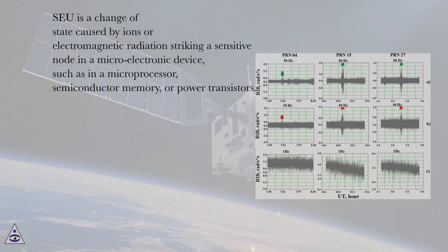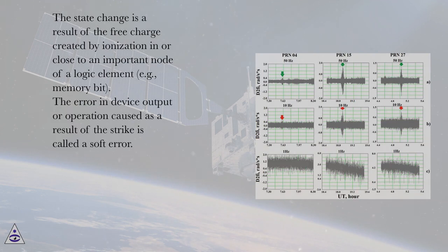SEU is a change of state caused by ions or electromagnetic radiation striking a sensitive node in a microelectronic device, such as in a microprocessor, semiconductor memory, or power transistors. The state change is a result of the free charge created by ionization in a region close to an important node of a logic element, for example, memory bit. The error in device output or operation caused as a result of the strike is called a soft error.